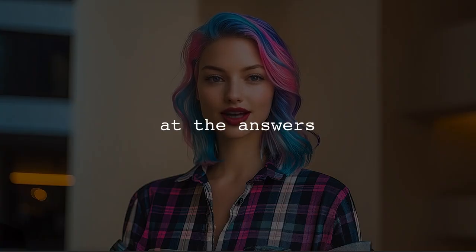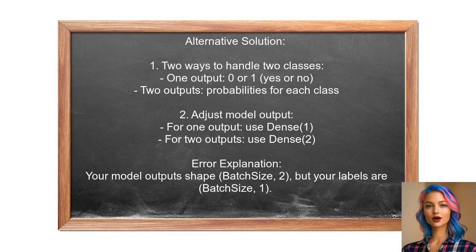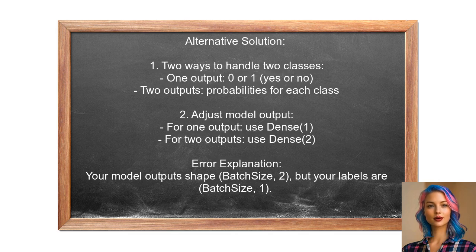Now let's look at answers provided by other users. An alternative approach suggests that for a two-class problem, you can handle the output in two ways: either have a single output indicating yes or no, or two outputs representing the probabilities of each class. If you're using the first method, change your model's last layer to output one value instead of two.